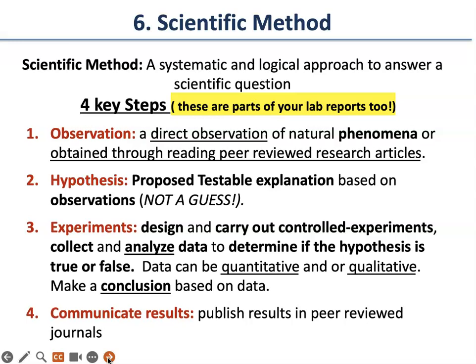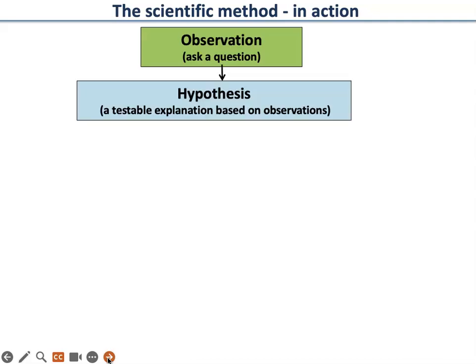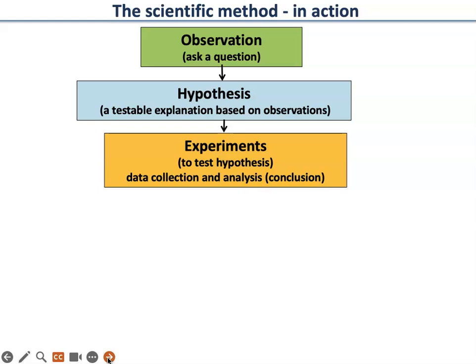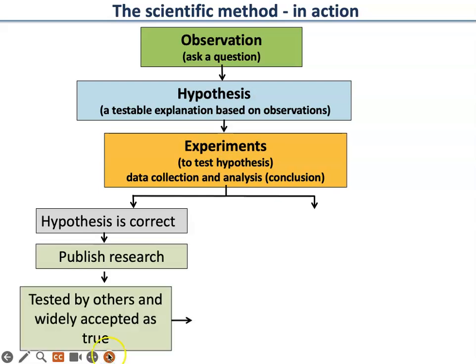That means other scientists in your field will read your research and how you did your experiments to see if it merits publication. If you did a poor job generating data, they will reject your paper; if you did a good job, they will accept it — they might ask for edits, then you resubmit. In the scientific method in action: first you ask a question — that is your observation. Then you design a testable hypothesis based on your observation. You test the hypothesis with experiments, collect data, analyze it, and form a conclusion. If your hypothesis is correct, you can publish your research.